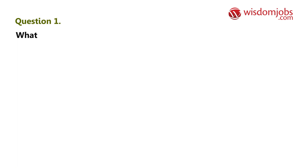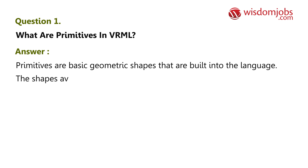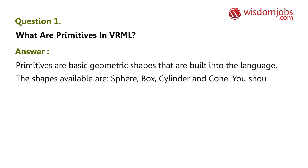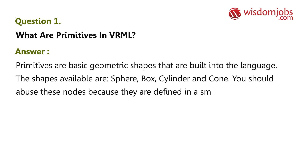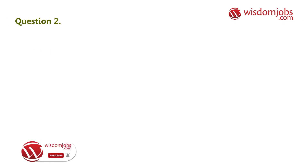Question 1: What are primitives in VRML? Answer: Primitives are basic geometric shapes that are built into the language. The shapes available are sphere, box, cylinder, and cone. You should use these nodes because they are defined in a small number of lines, keeping the size of your document at a minimum.